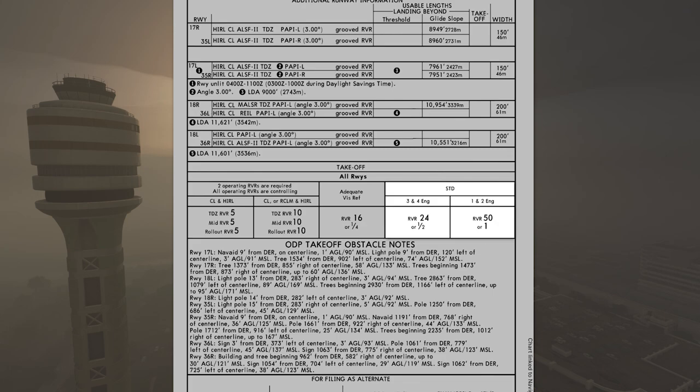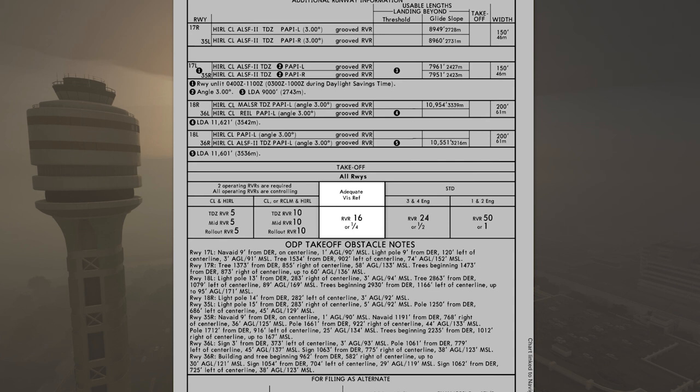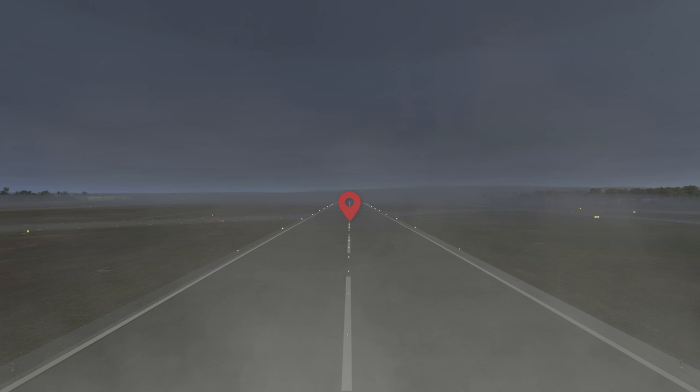Without any op specs, you'd follow this chart. "Adequate visual reference" means runway markings or runway lighting that provides the pilot with adequate visual reference to continuously identify the takeoff surface and maintain directional control throughout the takeoff run. Basically, we need the minimum visibility to see the runway environment. If we can't see the centerline markings because visibility is bad, that's not adequate visual reference.